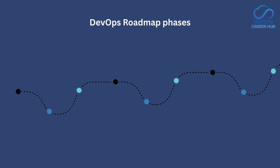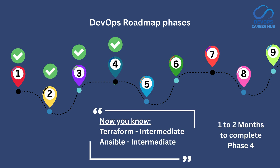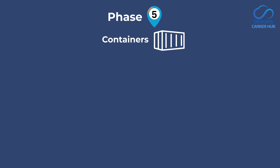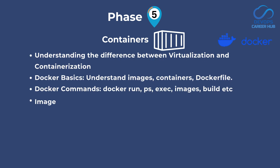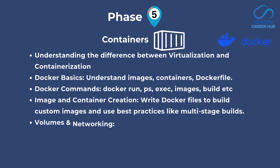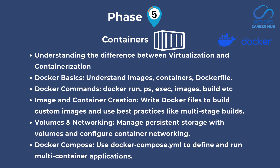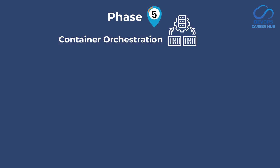With learning Terraform and Ansible, you will complete phase 4. Phase 5 is all about learning containers and orchestration. For containerization, I would recommend Docker. First get an overview of virtualization and what containerization is, then learn how to write efficient Dockerfiles. Try to create and manage containers and learn the important Docker commands like Docker Run, Docker PS, Build, etc. Have some idea on the networking part of containers and also get an overview of Docker Compose as well.